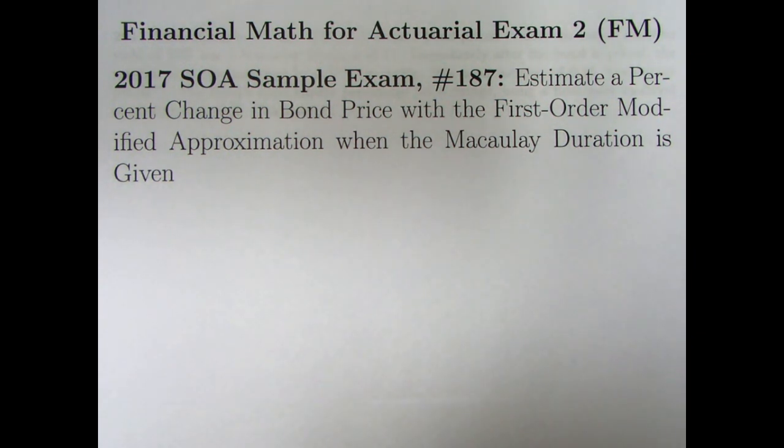This is a relatively short video, similar to the last video where we are going to use the first-order modified approximation. We derived that formula in the last video. The goal is to estimate a percent change in bond price with that first-order modified approximation when the Macaulay duration is given. It's a pretty similar problem. We're not going to derive the formula in this video, we'll just use it.